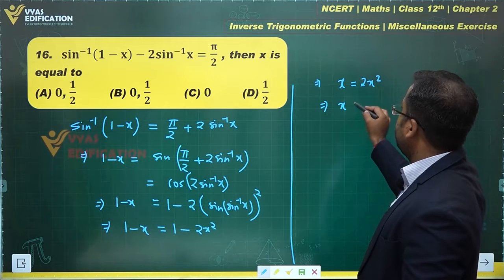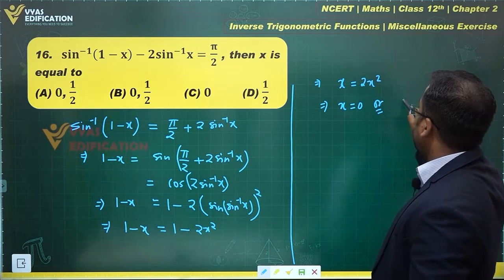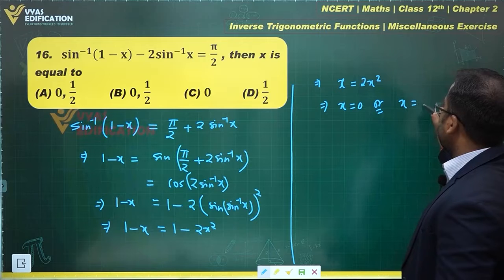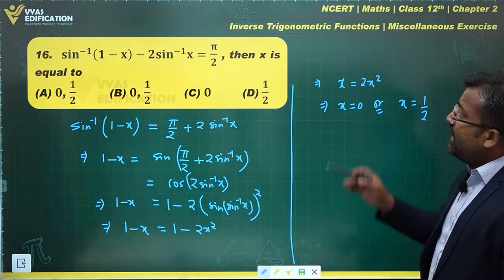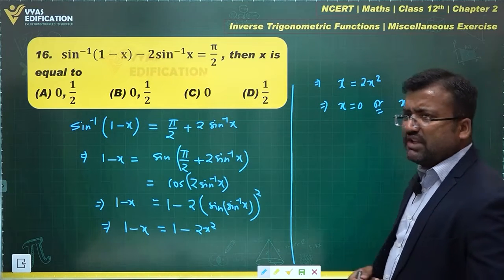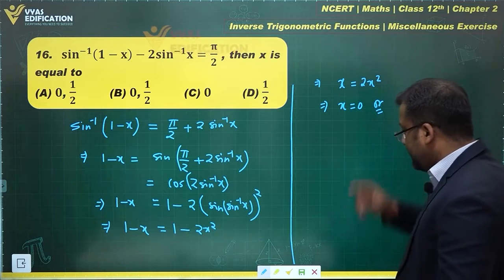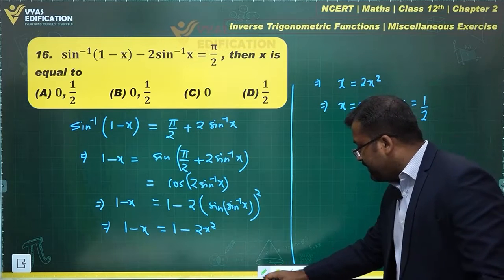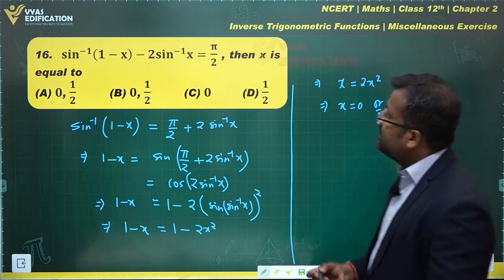Simplifying, this gives me x = 2x², or x equals 0 or x equals 1/2. Now we'll have to check the answers we've obtained. Let's check x = 0 first.